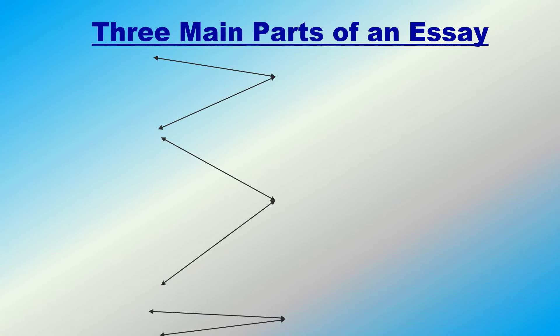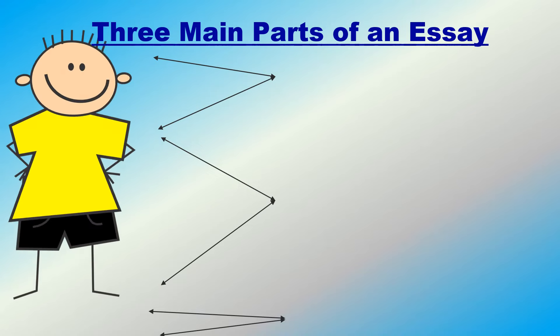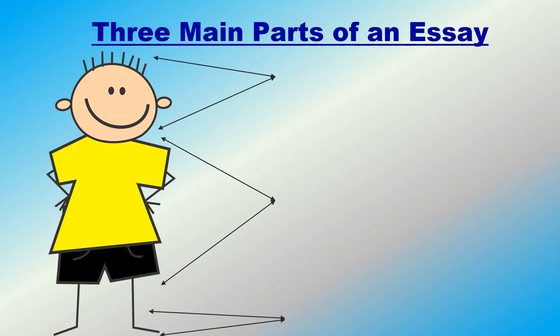To help explain the three main parts of an essay, I'd like to welcome my very good friend Bobby. Bobby is going to help us understand the parts of an essay better. Look at Bobby very carefully — I have divided his entire body into three main parts. First there's his head, which is not too big and not too small. Then we have his neck down to his legs, which is the biggest region. Finally, we have his tiny feet, which is the smallest part.